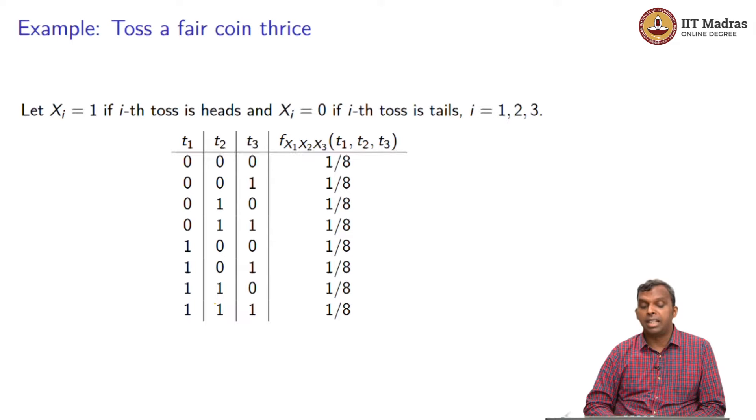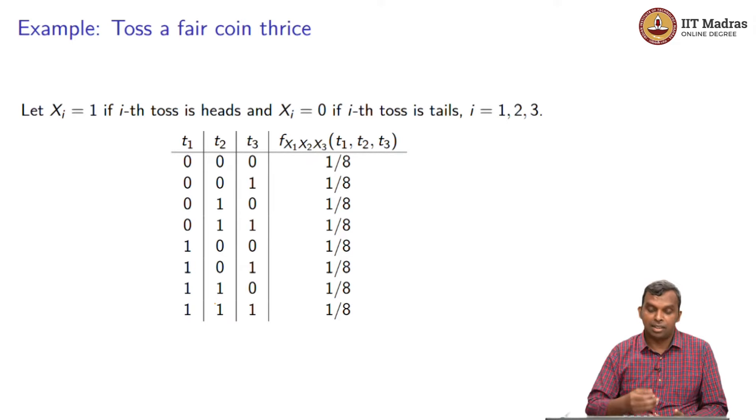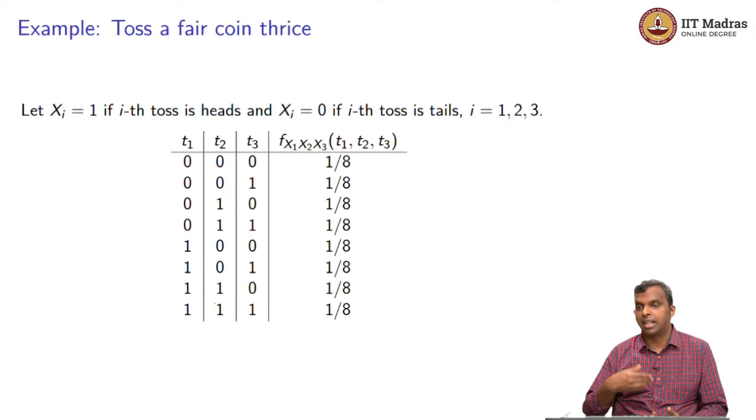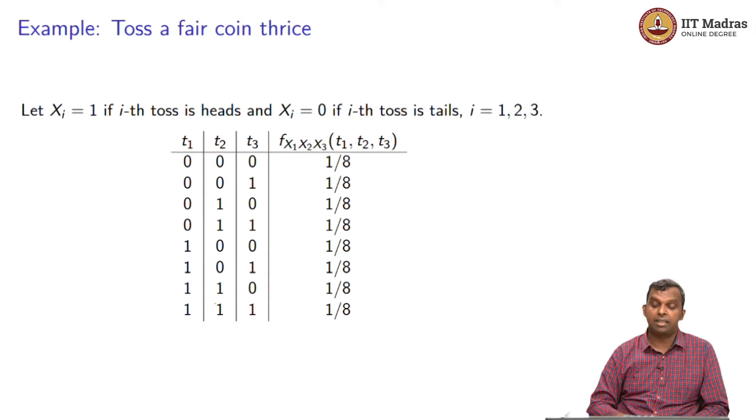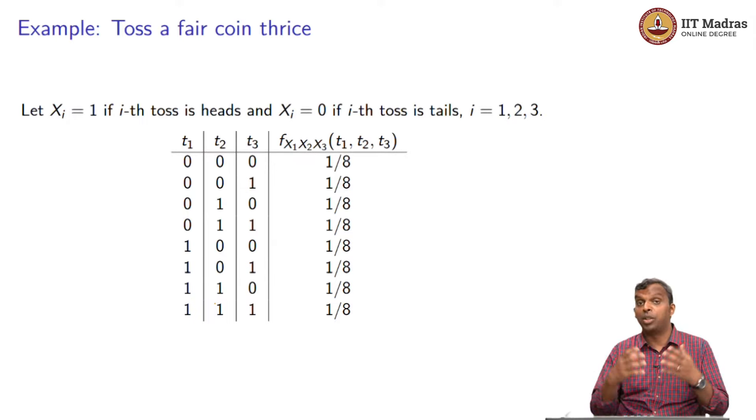Notice how I have written these 0s and 1s, it is very common to write them in this sequence, start with all 0s and then work your way towards all 1s by flipping the last one, making it 0 to 1. And every possibility, the joint PMF, the probability that the first toss is tails and second toss is tails and third toss is tails, that is half into half into half, 1 by 8. And any other case also, it is 1 by 8, the coin is fair, whether it is head or tails, probability is half, you just multiply half three times, you get 1 by 8. There are 8 possibilities, each is 1 by 8. The joint PMF is uniform.